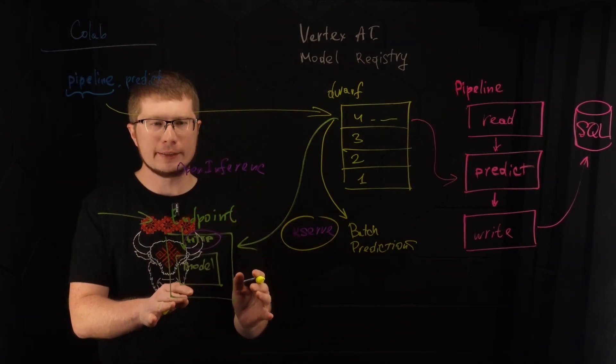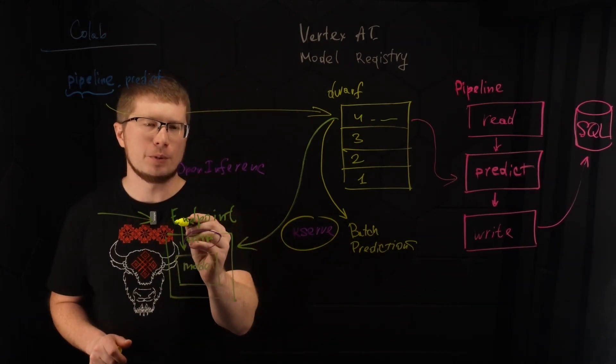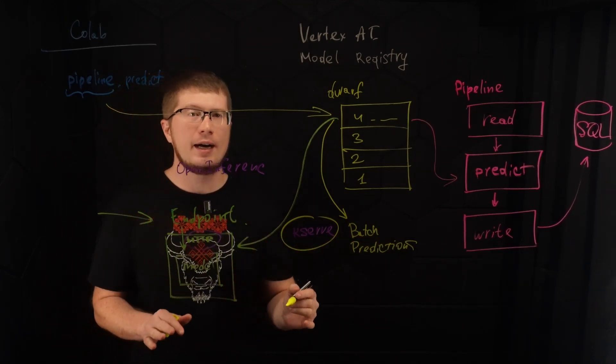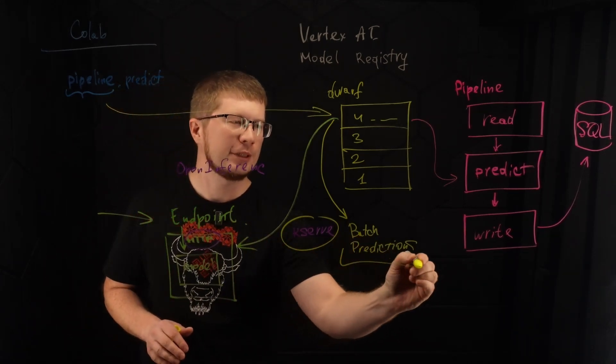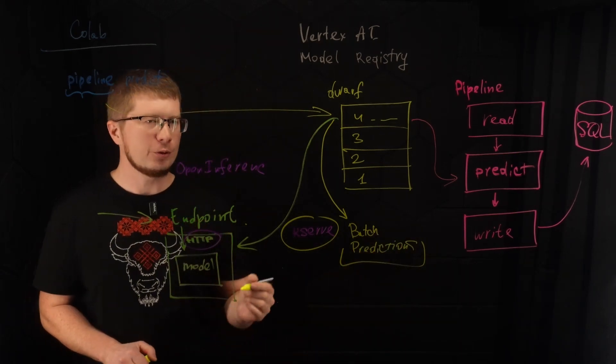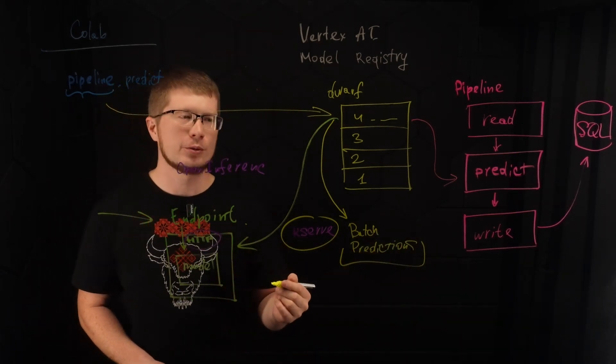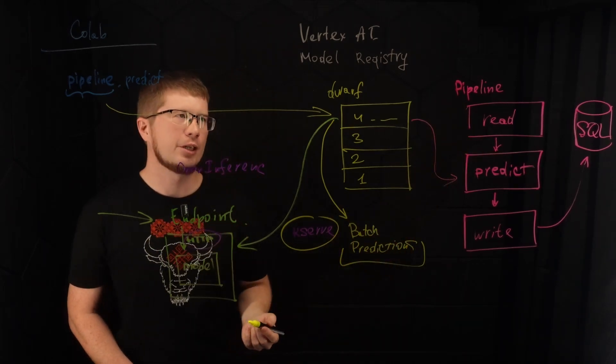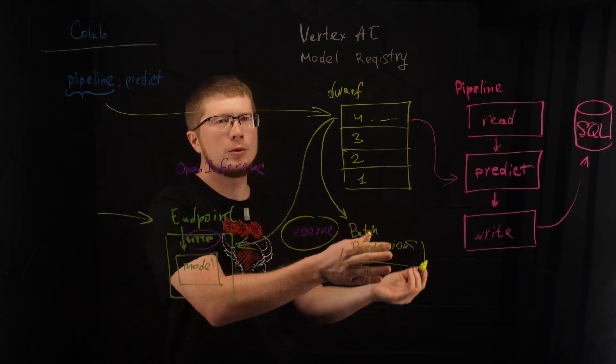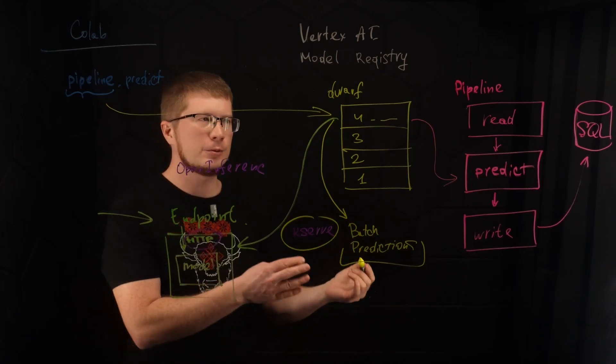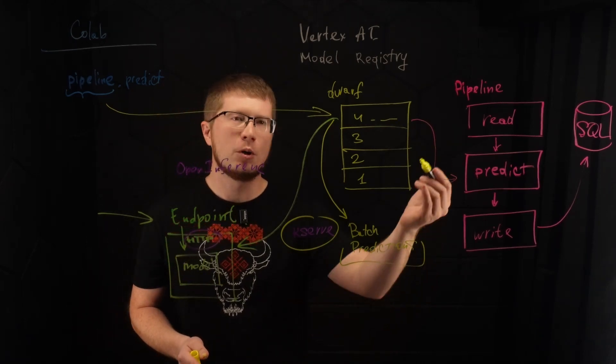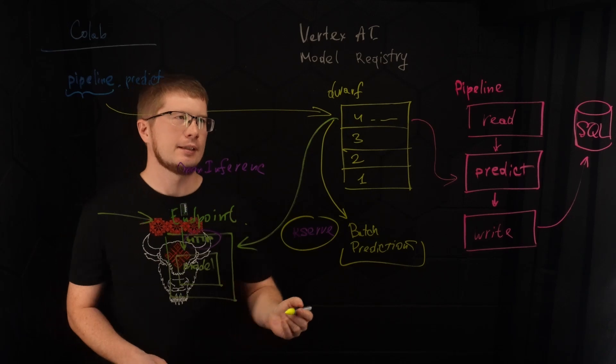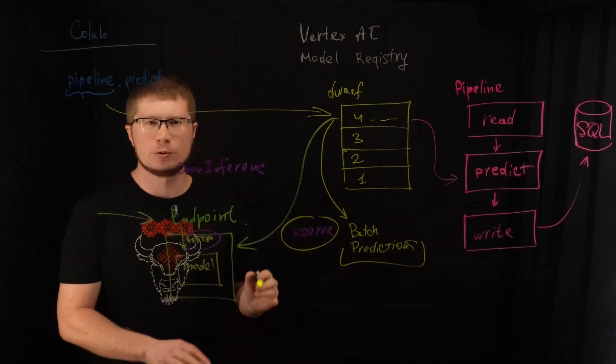So one Docker container can potentially work with both endpoint and batch prediction. However, I don't recommend using batch predictions. Because first of all, it's very hard to troubleshoot. And secondly, we have the pipeline anyway for batch jobs. So it's way more reliable, easier to troubleshoot and more powerful because you can connect it to other steps like reading or writing back to Mongo or whatever you decide.